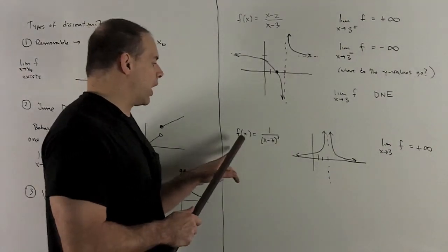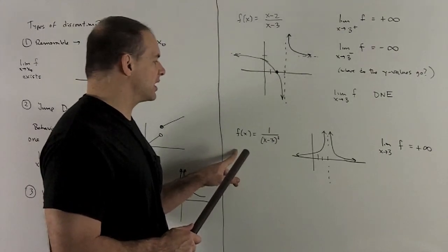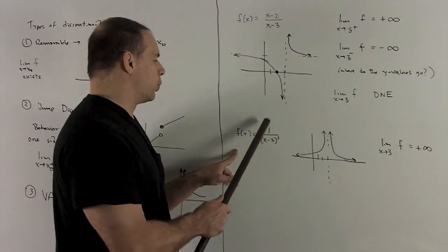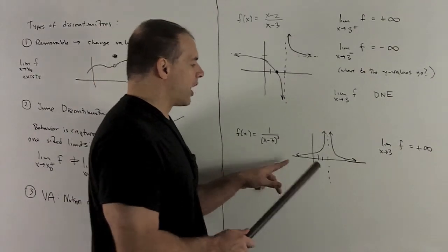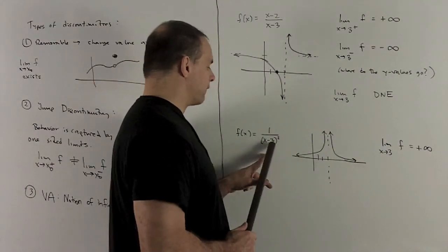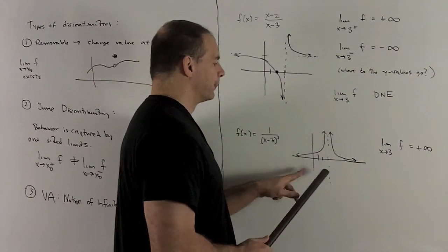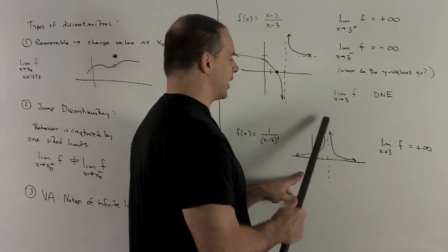Okay, for an example of where the two-sided limit would exist in this case, let's try f of x equal to 1 over x minus 3 squared. So our graph is going to look like this. We have the vertical asymptote at 3, and you'll notice in this case, as we check each side, we're going to be going up to infinity in both directions.